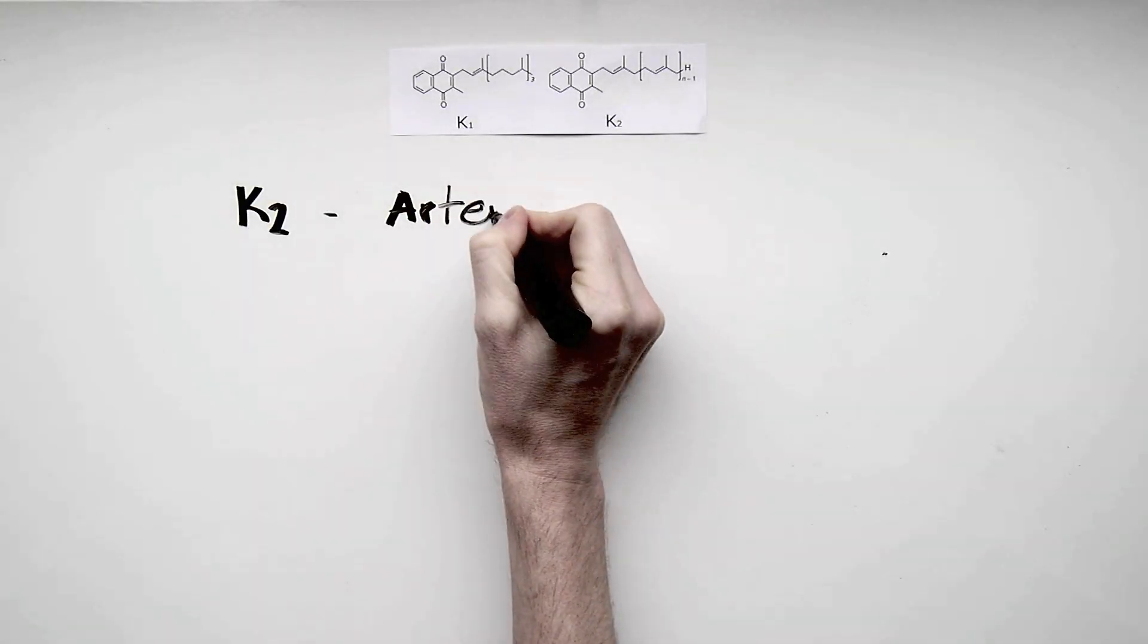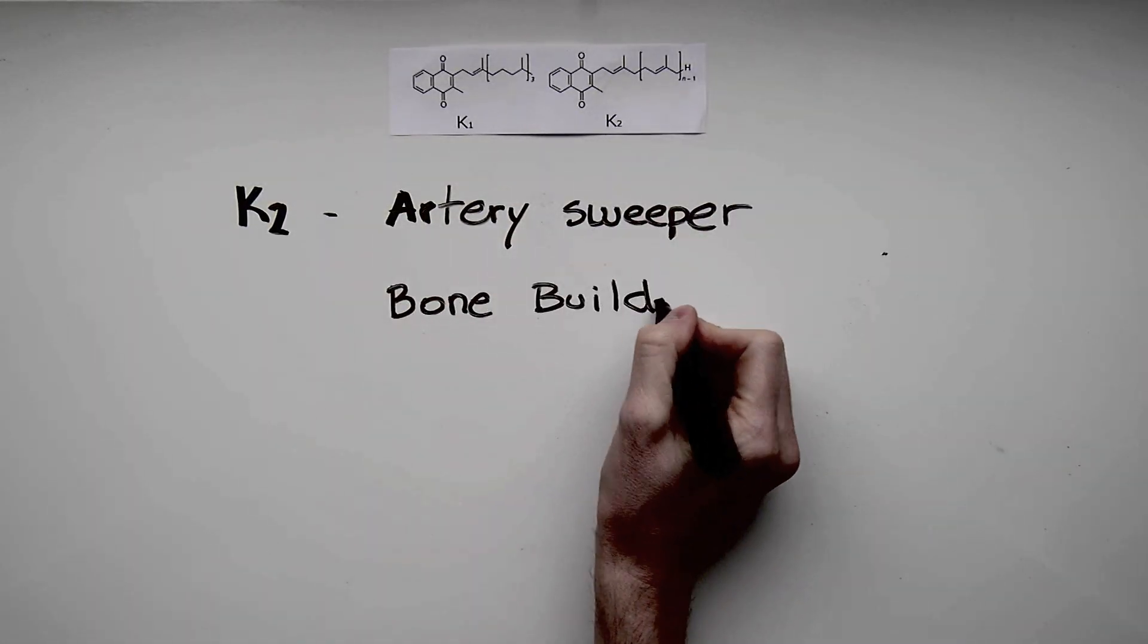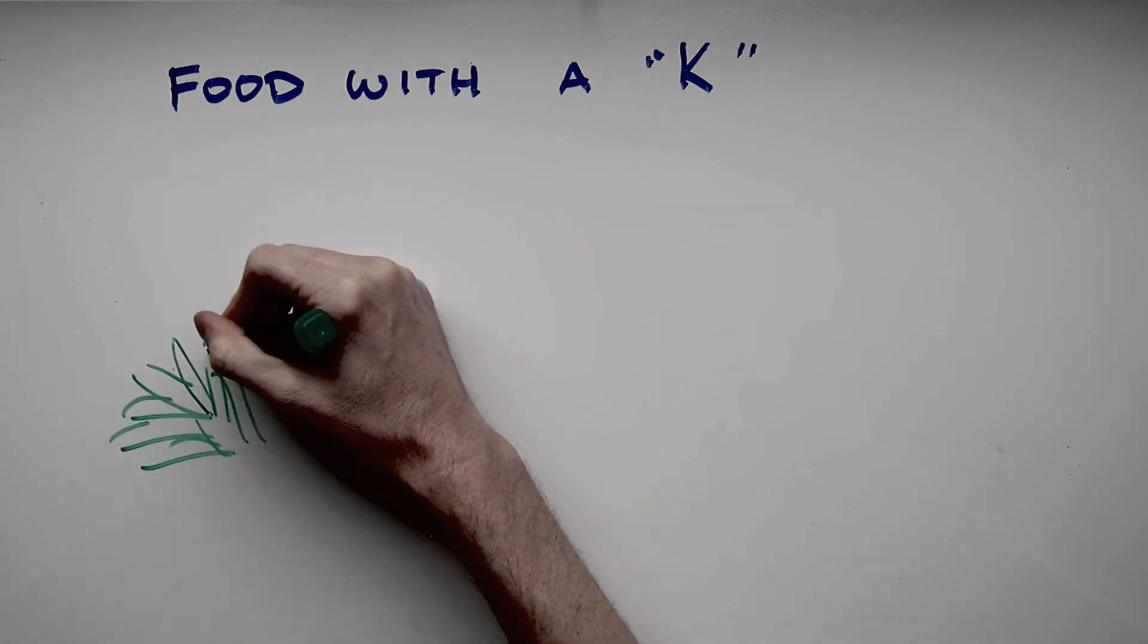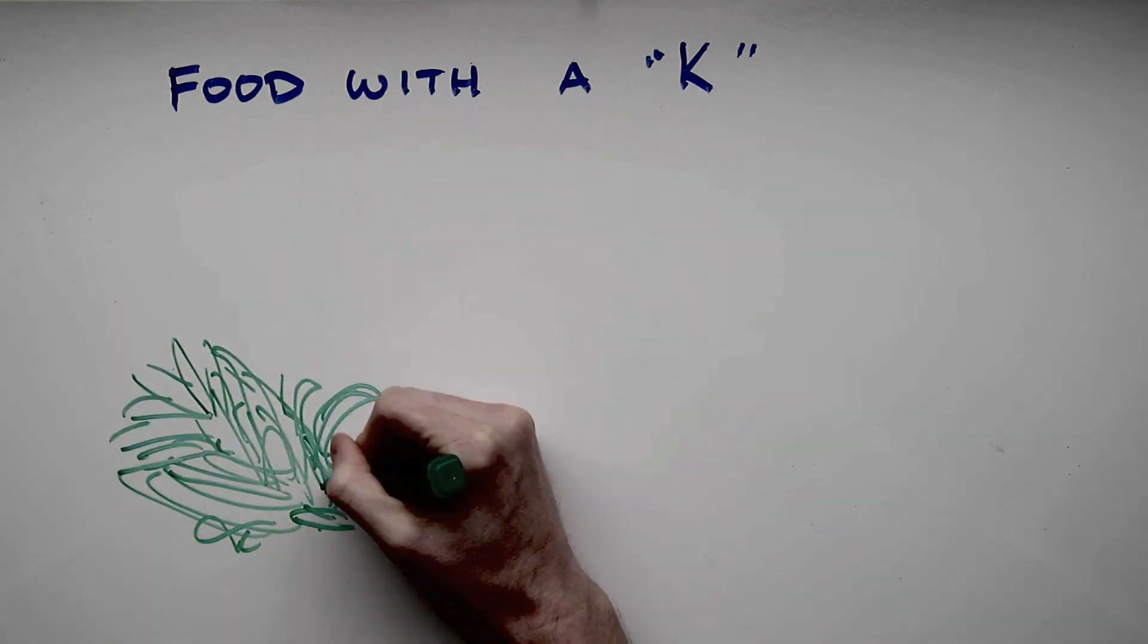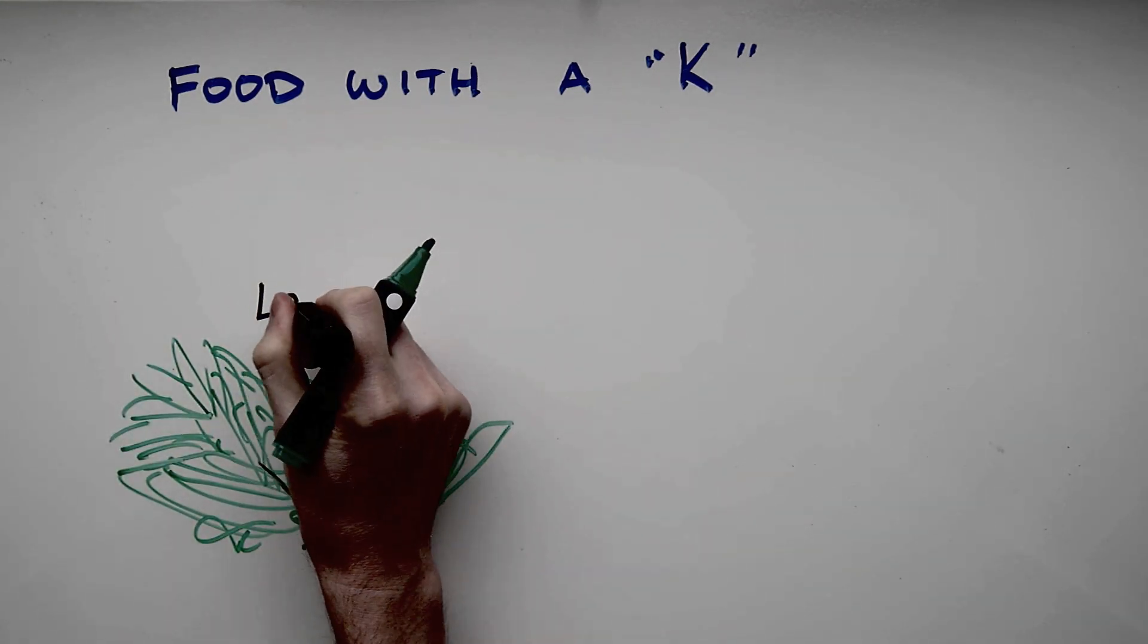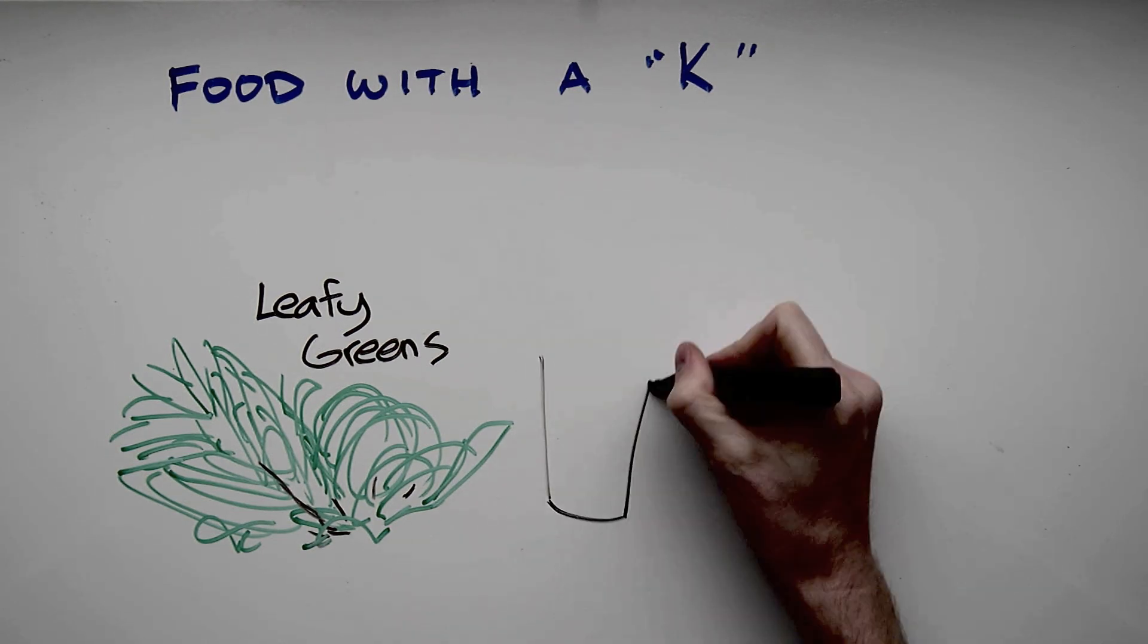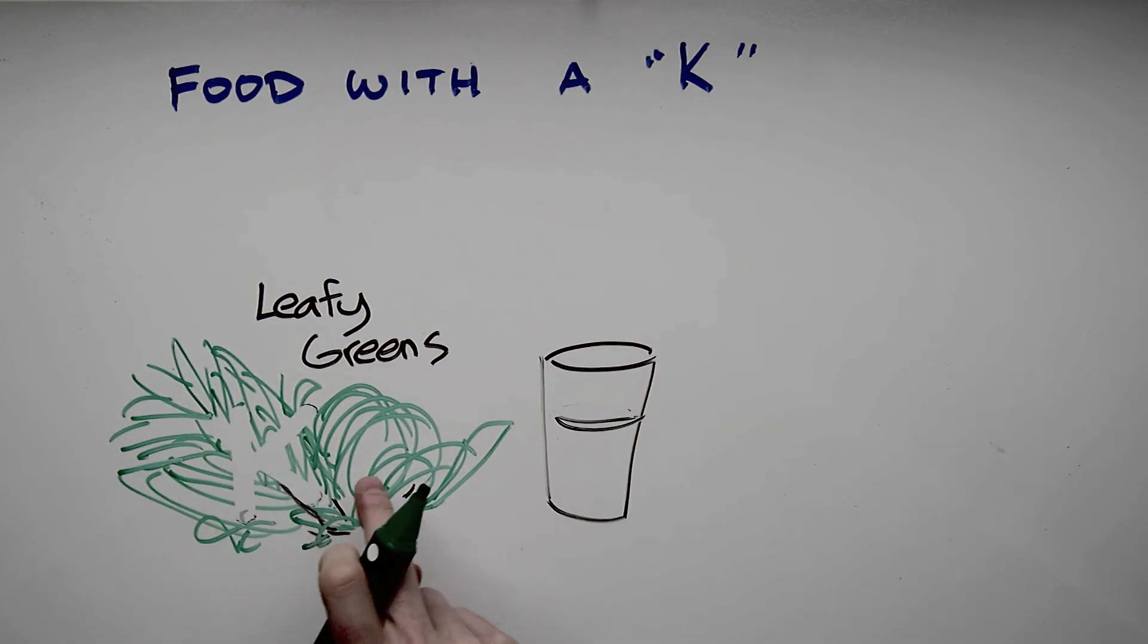So K2 not only sweeps our arteries but it builds our bones, and research going back 70 or 80 years proves this. What about food with vitamin K then? Well, it's food that you probably didn't like as a kid: things like broccoli, spinach, kale, parsley, things your parents told you you had to eat. Well, that food is rich in vitamin K1.